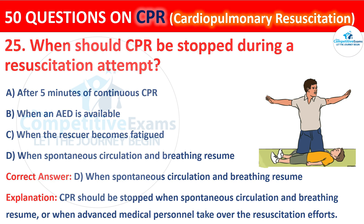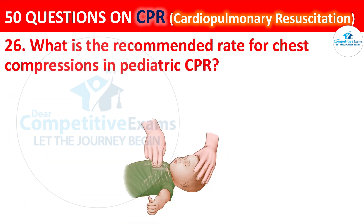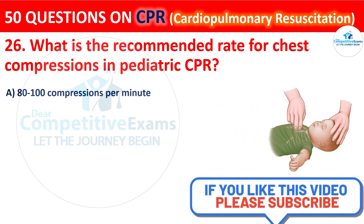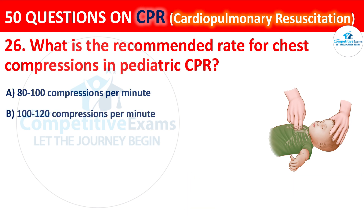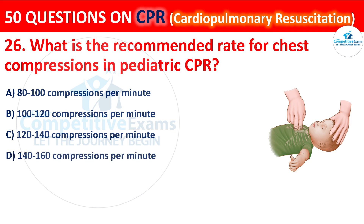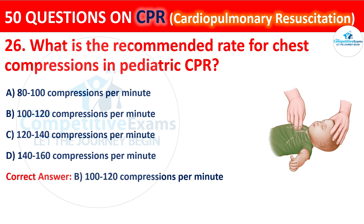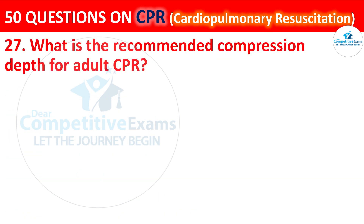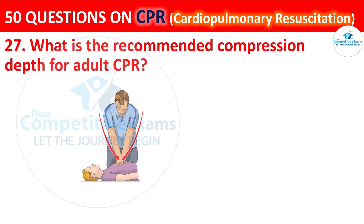Question 26: What is the recommended rate for chest compressions in pediatric CPR? The options are: 80 to 100 compressions per minute, 100 to 120 compressions per minute, 120 to 140 compressions per minute, or 140 to 160 compressions per minute. The correct answer is B — 100 to 120 compressions per minute. The recommended rate for chest compressions in pediatric CPR is between 100 and 120 compressions per minute.